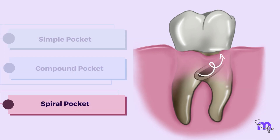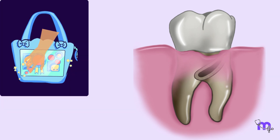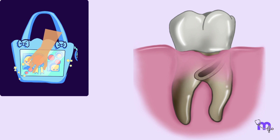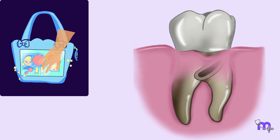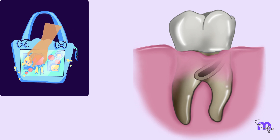The third type of pocket is the spiral type, also called the complex type. Imagine searching for something important in your messy bag — your hand starts in one direction and moves to different areas. This type of pocket also starts on one tooth surface and then twists around the tooth to involve one or more surfaces. It is more commonly seen in the furcation areas.